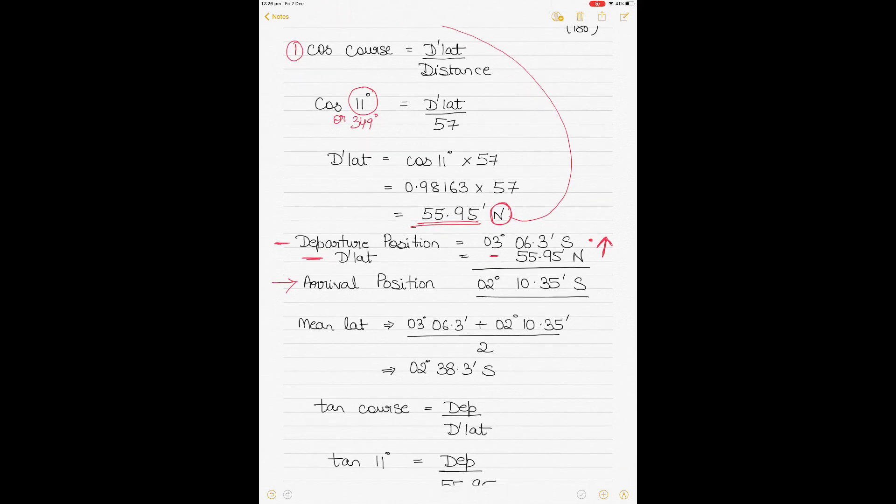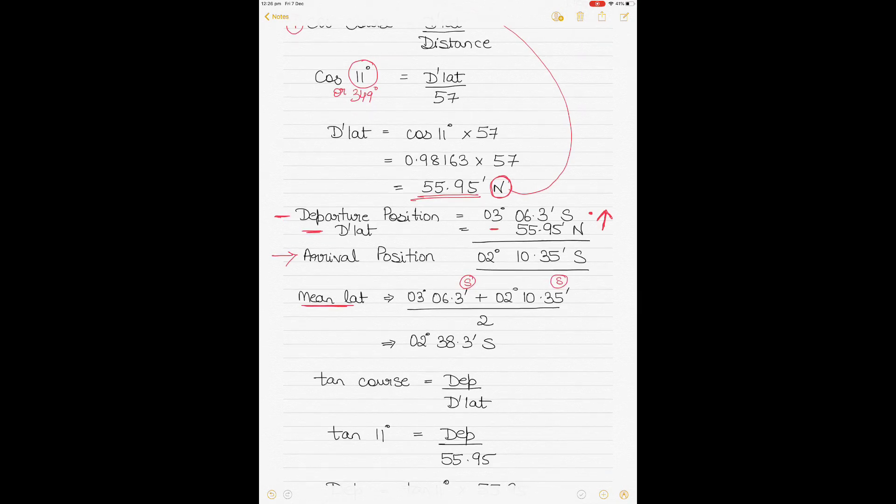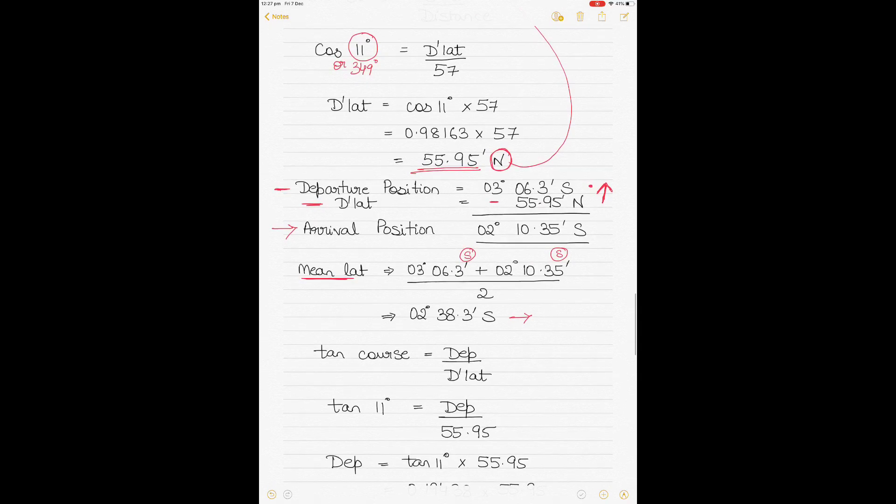Once we get our arrival and departure position, we can calculate our mean lat. Because the arrival and departure positions are both in the southern hemisphere, you can calculate the mean lat easily by adding the two and dividing by two to get a mean of the two positions, which in this case is 02° 38.3' S. This gives you your mean lat or m lat.